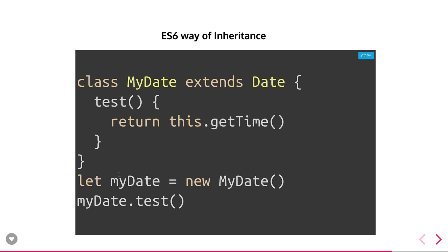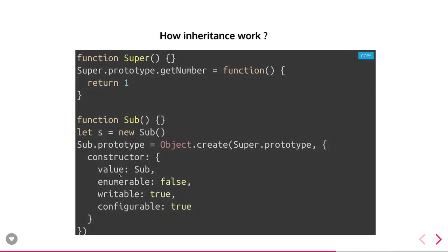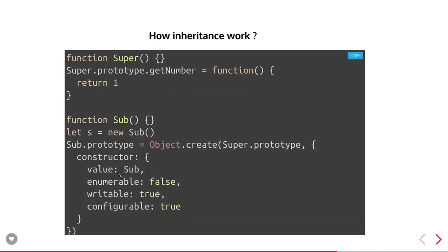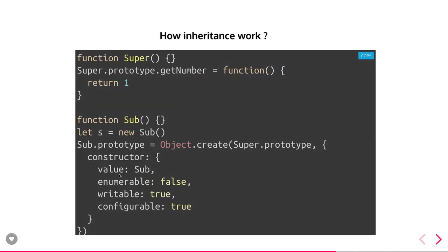The ES6 way of inheritance is plain and simple — you just extend a particular class into another class. But this is syntactic sugar; what is actually happening under the hood is dealing with the prototype only. In the next video let's talk more in-depth about JavaScript interview questions, specifically about shallow copy and deep copy.